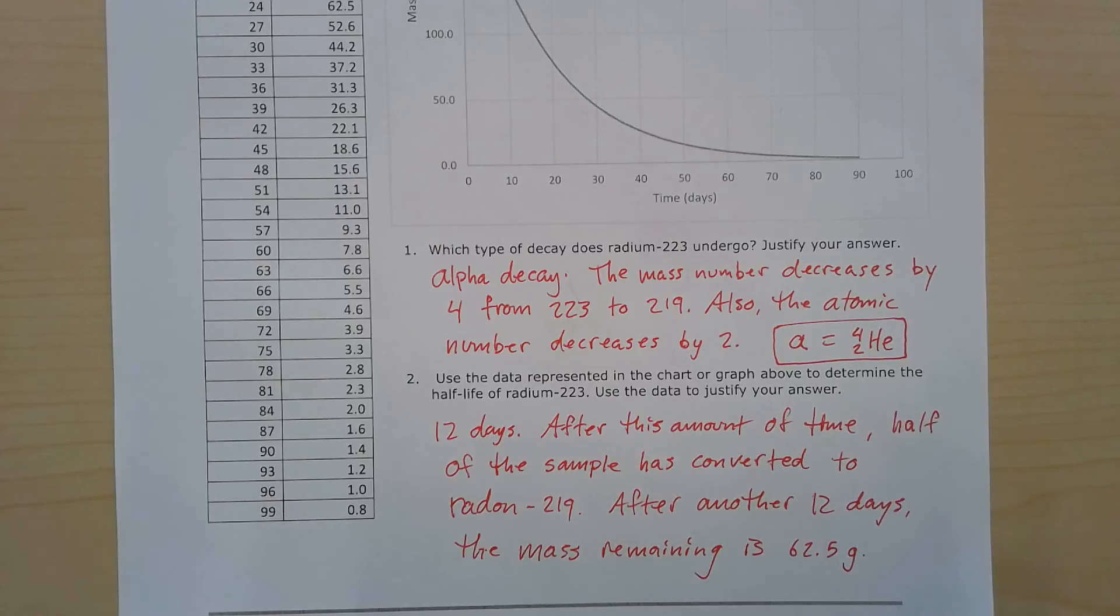And the last question here. Use the data represented in the chart or graph above to determine the half-life of radium-223. Use the data to justify your answer. So I said 12 days, because after this amount of time, half of the sample has converted to radon-219 from radium-223, and after another 12 days, the mass remaining is 62.5 grams.